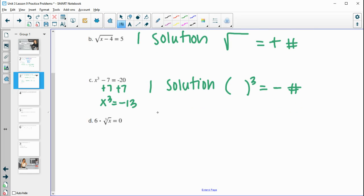And then a cube root of something equals 0, again, only going to be one solution. The only thing that we have the cube root equal to 0 would be if this is 0.